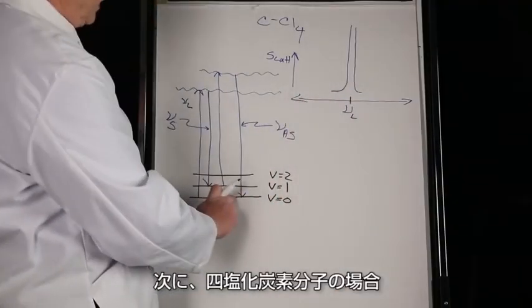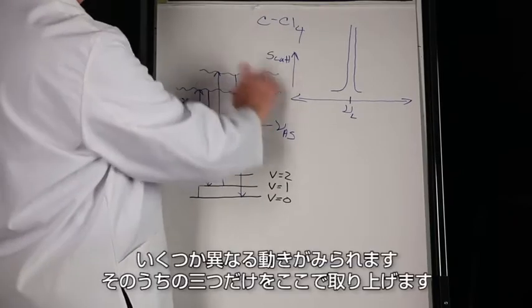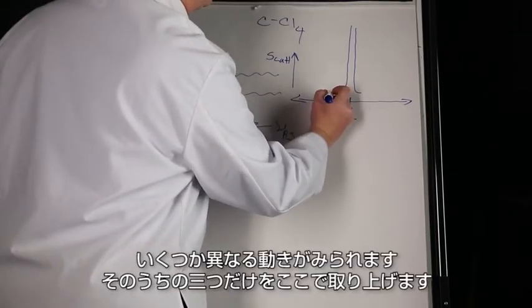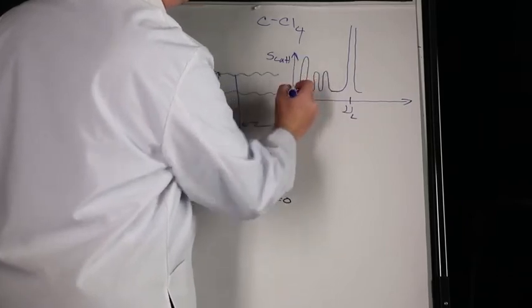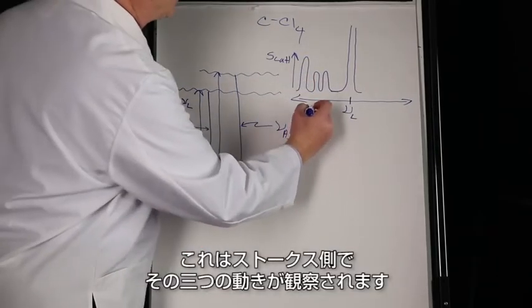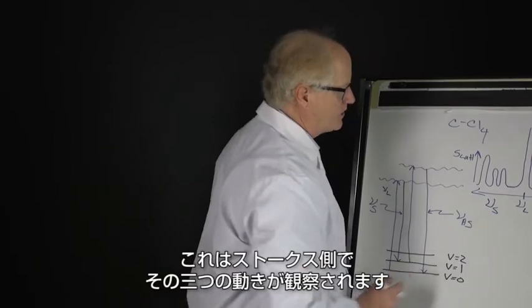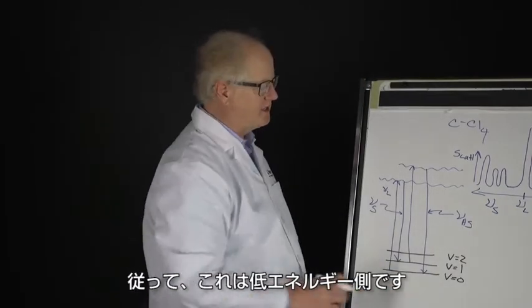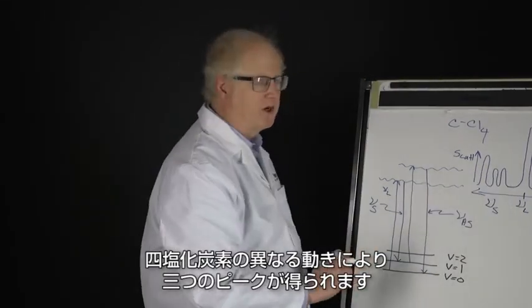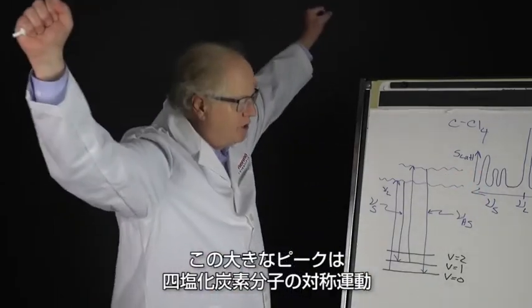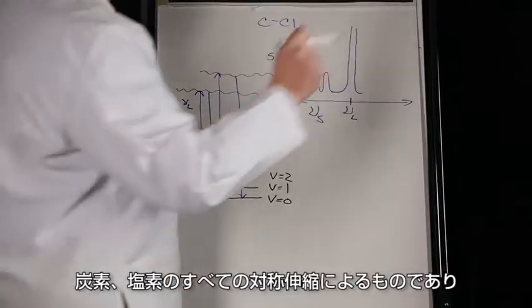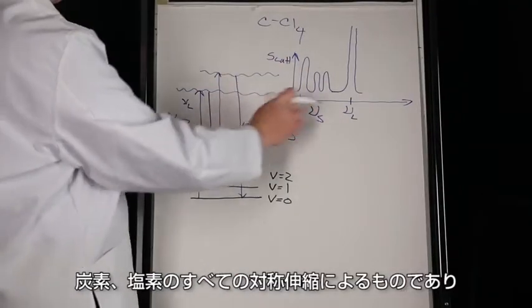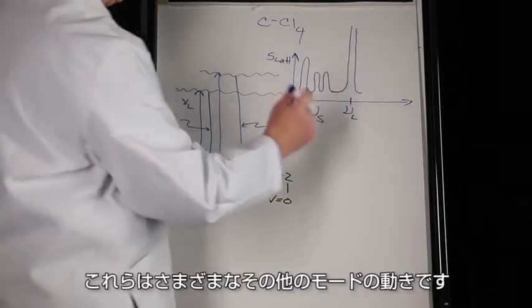Now, if we consider the carbon tetrachloride molecule, it has a couple of different motions. We'll just look at three. There are the three motions, and this is on the Stokes side. So this is on the lower energy side. So we get three peaks due to different motions of the carbon tetrachloride. This big one is due to the symmetric motion of the carbon tetrachloride molecule—the symmetric stretch of all the carbon chlorines. These are various other modes.